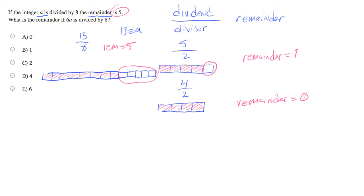Well, now we can answer the real question, which is, what is the remainder when 6A is divided by 8? So now we're going to do 6A, which is 6 times 13 divided by 8.